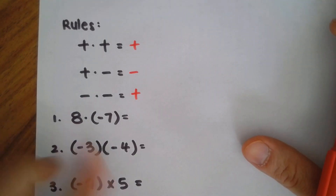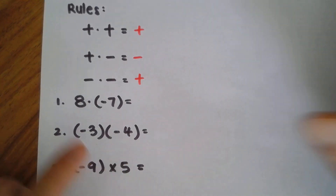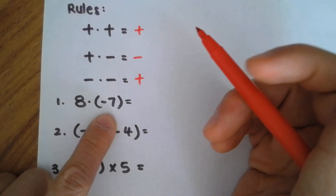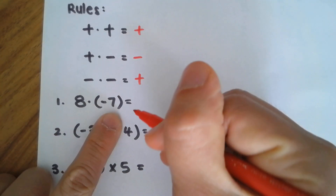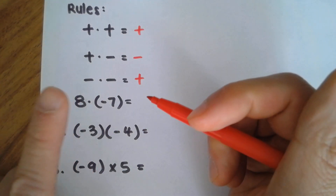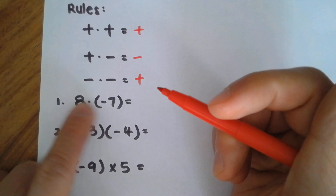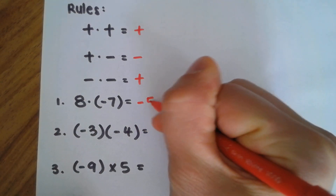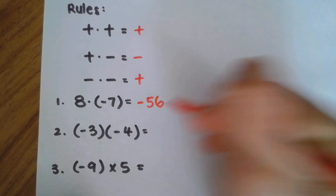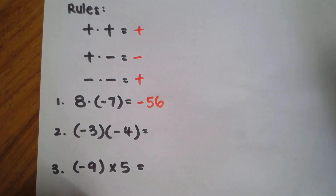Let's take a look at number one: eight times negative seven. Well, eight times seven is 56, but remember this is positive times negative, so the answer is negative 56. Easy.